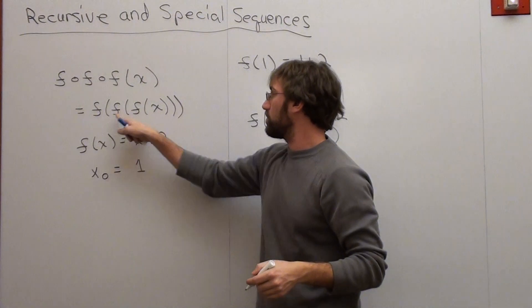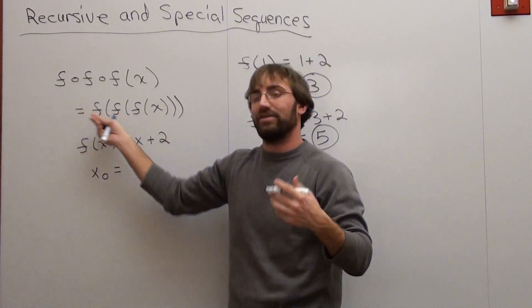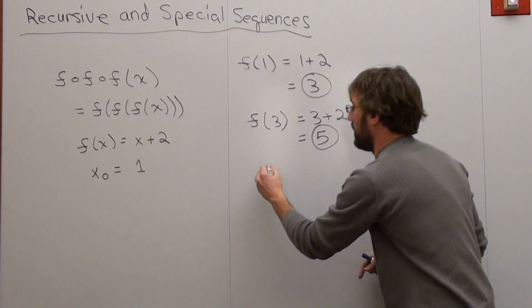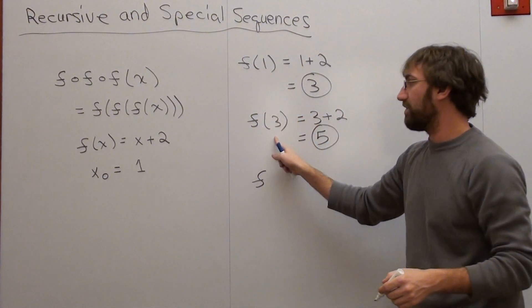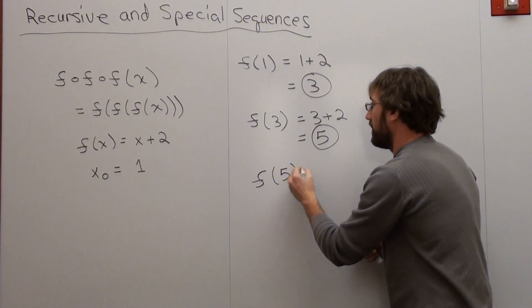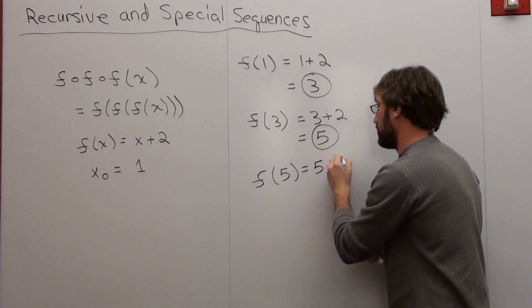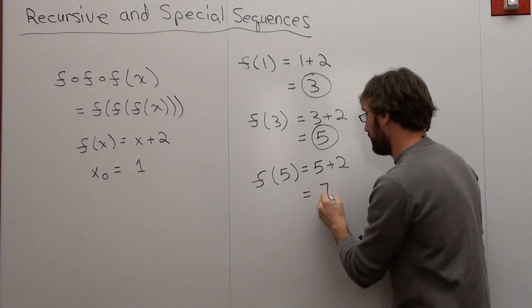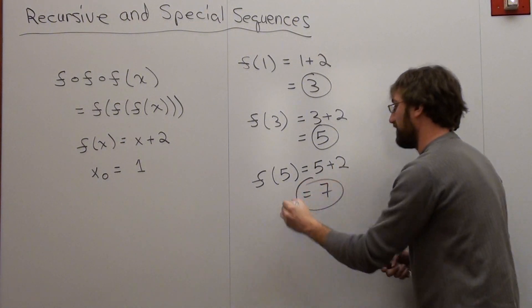And we're going to do it another time. We have to do it once, twice, three times. If there were 8 f's, we'd have to do it eight times. So when we do it our third time, it's not f of 1, it's not f of 3, it's f of 5. And that's equal to 5 plus 2 equals 7.